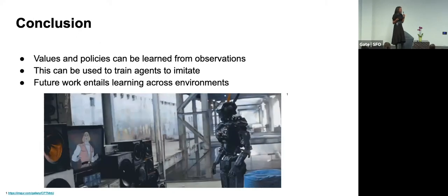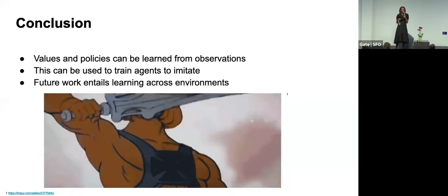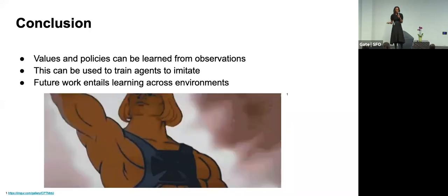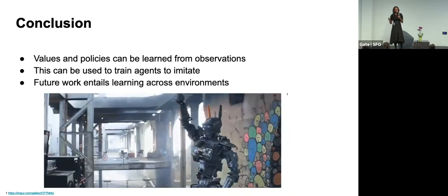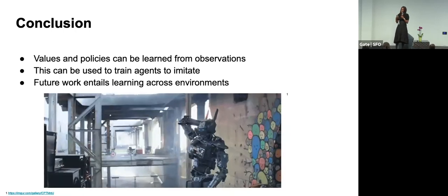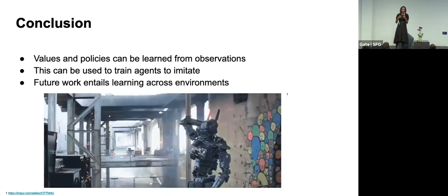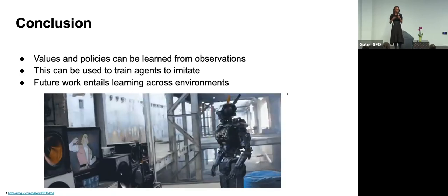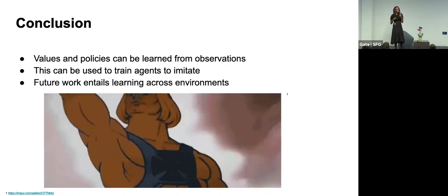In conclusion, I've shown that values and policies can be learned from observations alone, and that these can be used to train agents to imitate. One thing I'm really interested in for future work is training agents to learn across environments — like using a video of a human to train a robot to perform a task. But that requires a lot more thought. Thank you everyone.